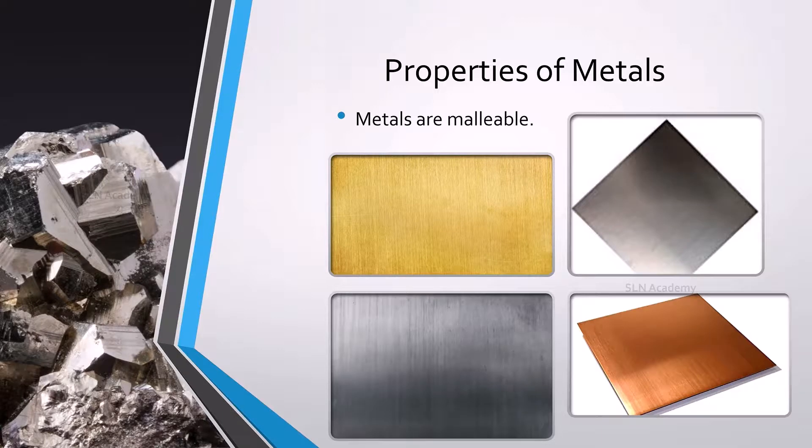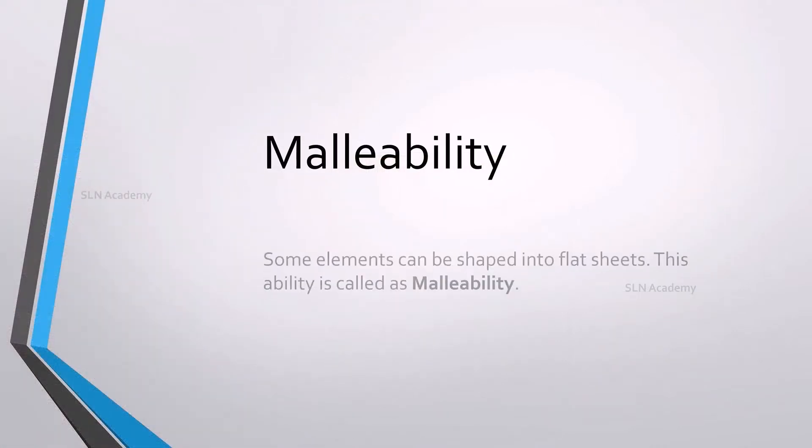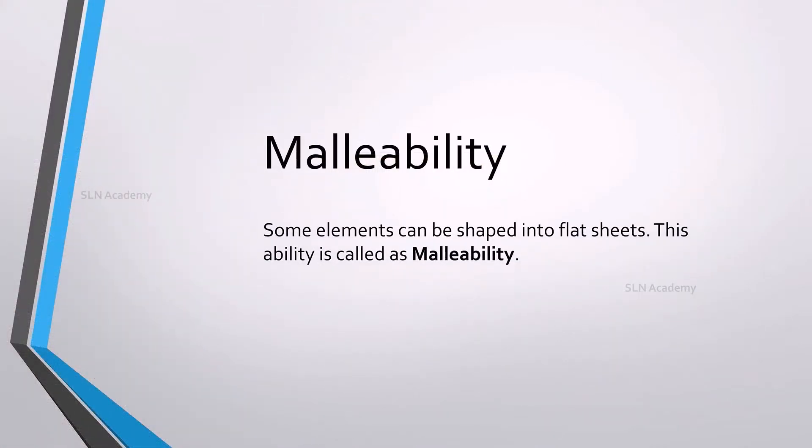Metals are malleable. What does it mean? Some elements can be shaped into flat sheets. This ability is called malleability.